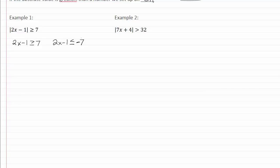Now we solve, so I'm going to add one to both sides. I have 2x is greater than or equal to 8, divide by two, and x is greater than or equal to 4.